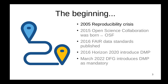In 2005 came out the first publication saying there is a problem with reproducing research. In 2015 was the official start of the open science collaboration, which ended up being what we now know as the Open Science Foundation. In 2016, the first FAIR data standards were published, regulating the way people should share data. Also in 2016, Horizon 2020 — the EU research program — introduced data management plans as mandatory. And in March 2022, the DFG, the internal research funding unit of Germany, also introduced DMPs as mandatory.